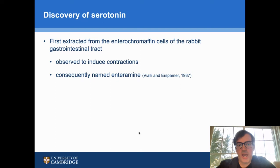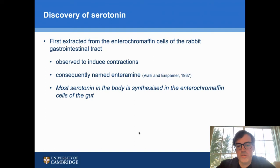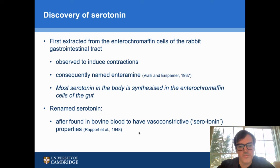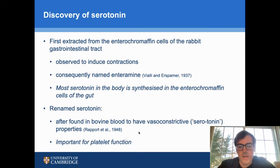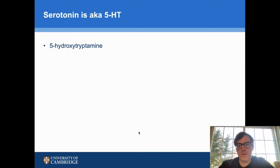Serotonin was first extracted from the gastrointestinal tract of rabbits, specifically enterochromaffin cells in the gastrointestinal tract, and it was observed to induce contractions. As a result, it was named enteramine. This is in 1937. We now know that most of the serotonin in the body is synthesized in the enterochromaffin cells of the gut. It was later renamed serotonin after it was found in blood to have vasoconstrictive properties. That was in 1948. We now know that serotonin is important for platelet function in the blood. The chemical name of serotonin is 5-hydroxytryptamine, often abbreviated 5-HT. I'll use serotonin and 5-HT interchangeably in this talk.